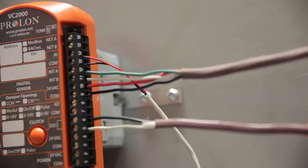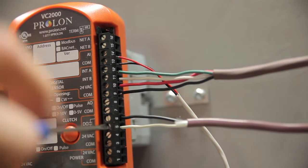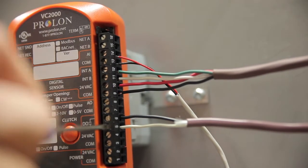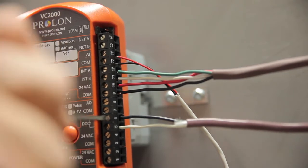If the VC2000 controls any terminal heating equipment, make sure to connect it to the appropriate output. If your equipment requires a dry contact to be enabled, connect it to the VC2000's digital output on terminals 5 and 6.